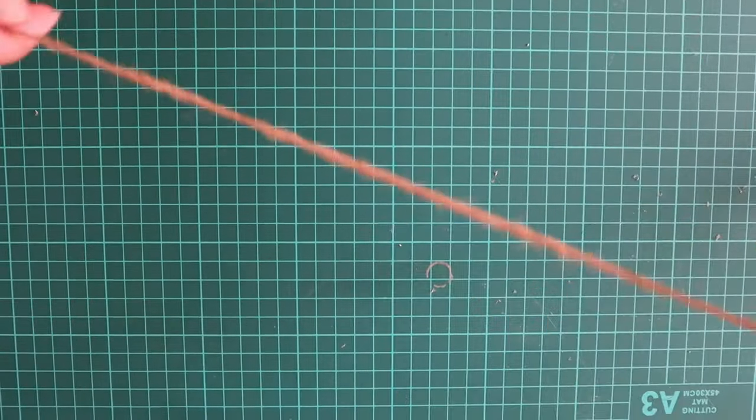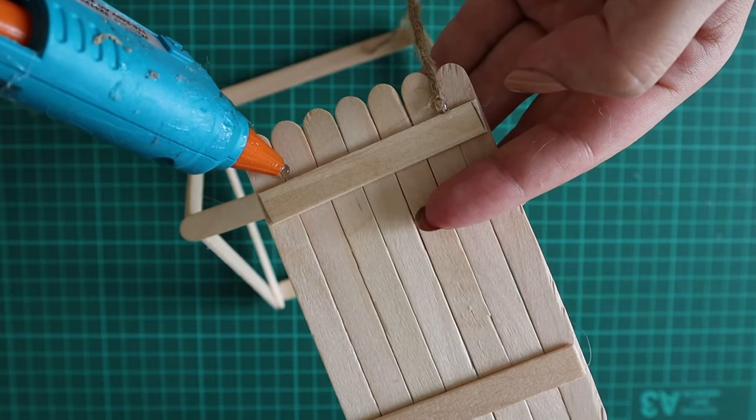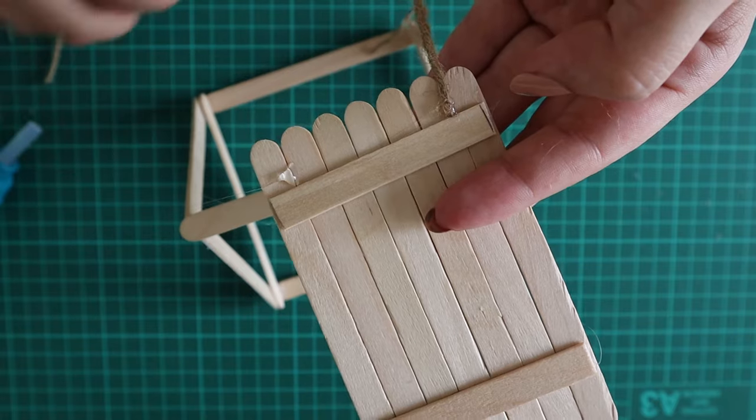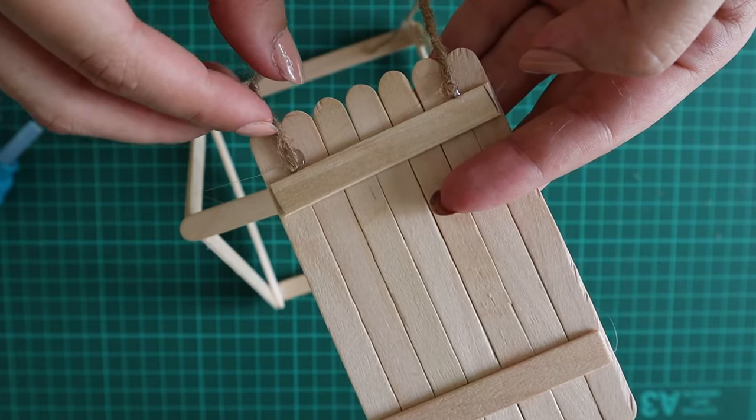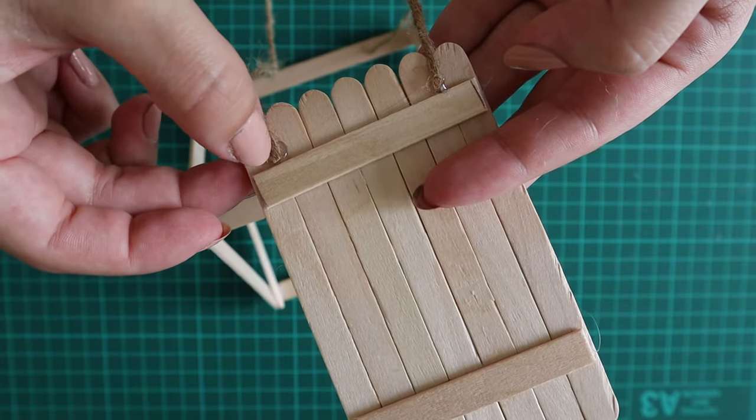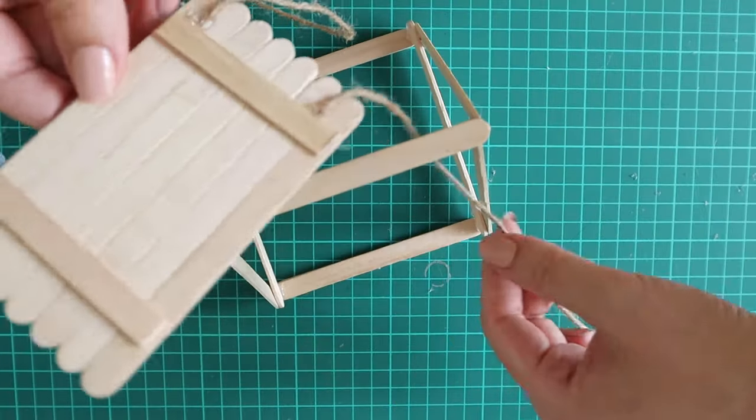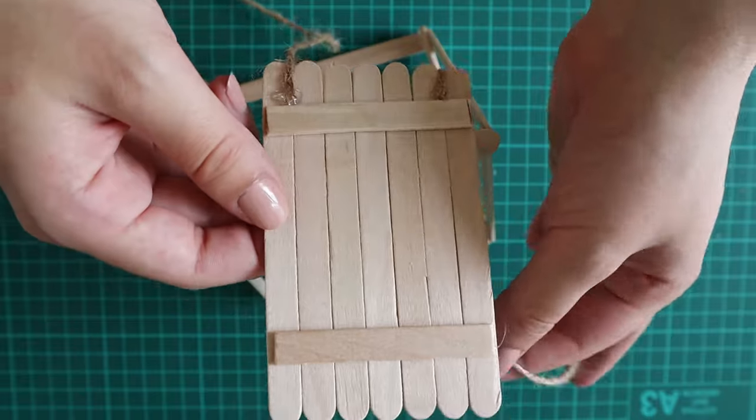Then I'm taking some brown string which will be the ropes of the swing set, and I'm gluing the end of one piece on one side and the end of a separate piece on the other side. You just need to make sure that both pieces are equal length so it won't be wonky. Then I'm threading the ends of the strings through the frame and gluing them onto the opposite ends of the seat.